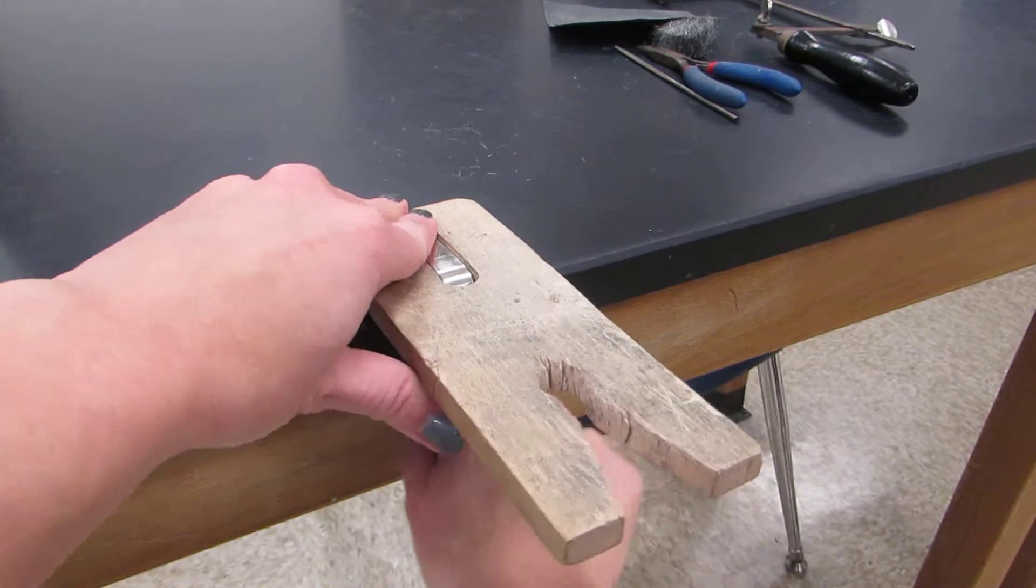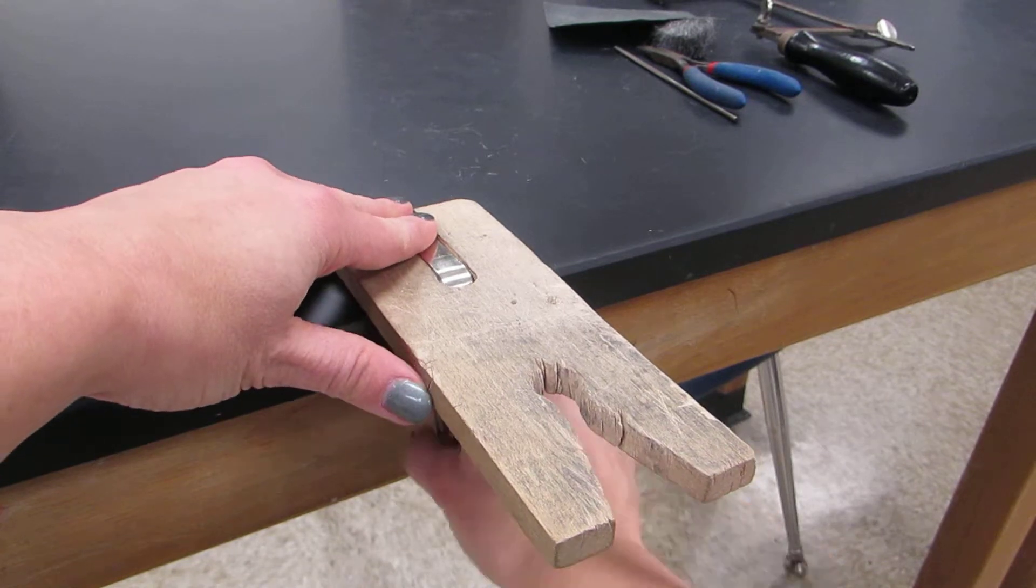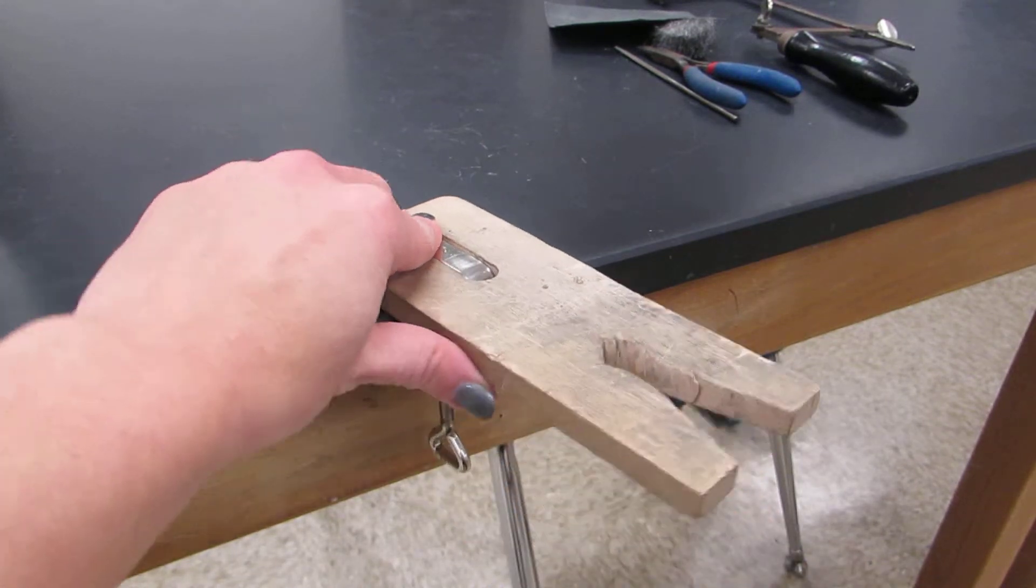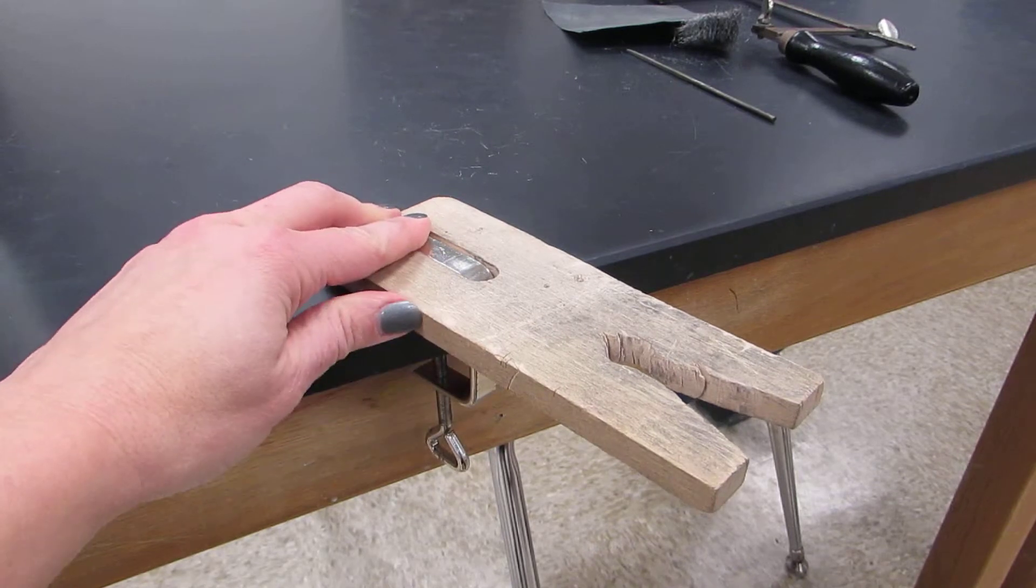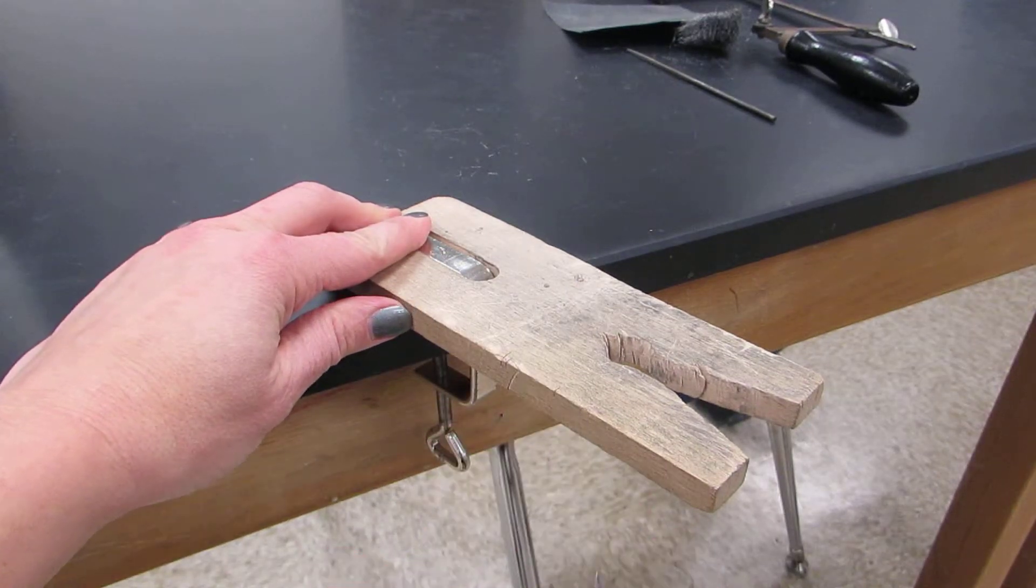So instead, what you're going to do is righty-tighty, lefty-loosey. So you're going to go ahead and take that off. If it is too difficult for you to take off, go ahead and grab your pair of pliers.